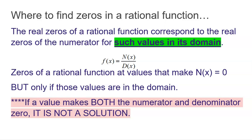The real zeros only — we're not worried about imaginary zeros here. The real zeros of a rational function correspond to the real zeros of the numerator, but only for values in its domain. If you have a value that's not in the domain, it cannot be a zero — it doesn't exist for the function. So zeros of a rational function are values that make the numerator equal to zero, but only if those values are in the domain.